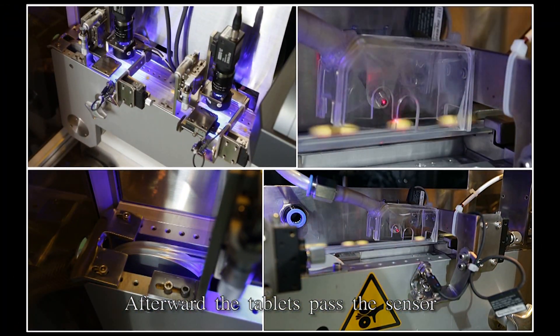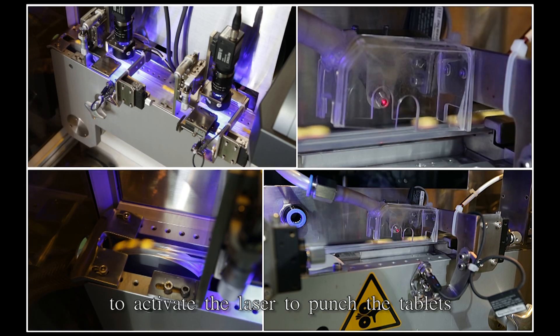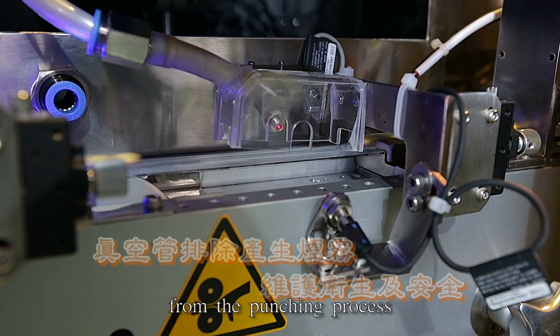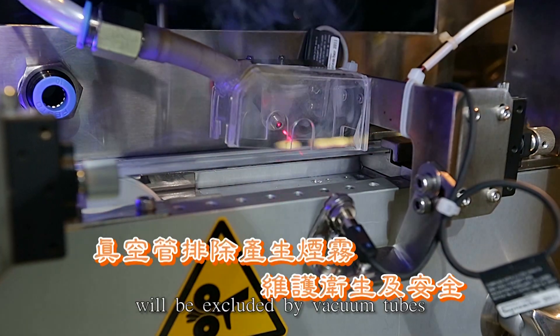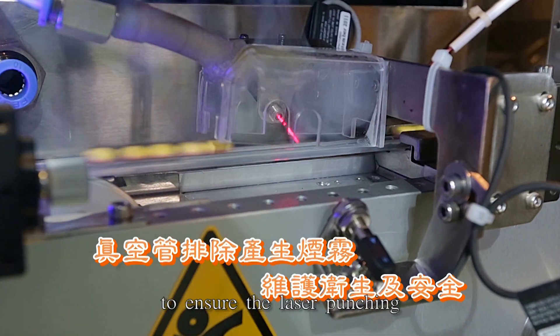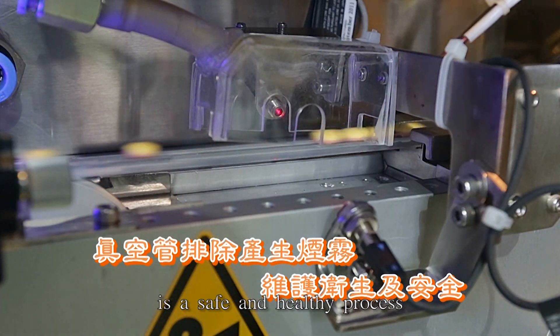Afterward, the tablets pass the sensor to activate the laser to punch the tablets. The residue and smoke from the punching process are excluded by vacuum tubes to ensure the laser punching is a safe and healthy process.